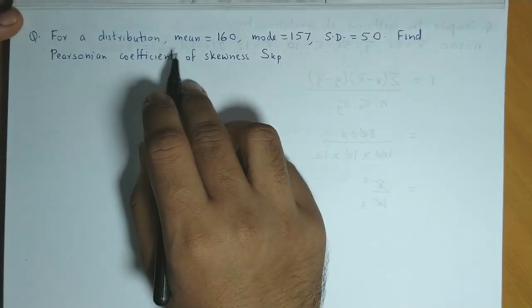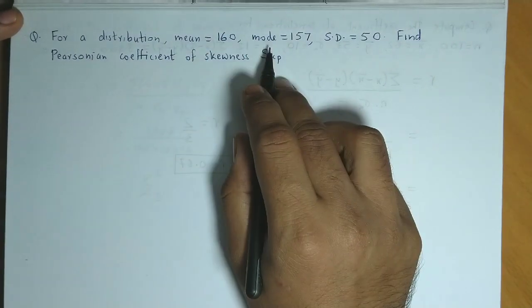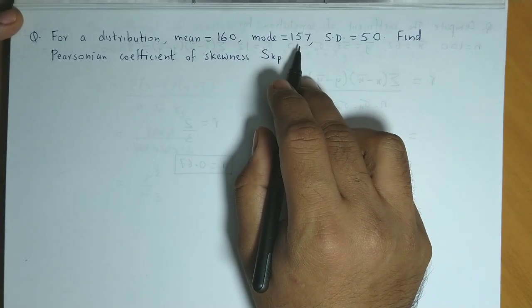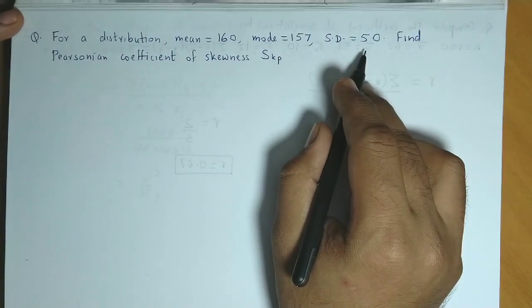Question is, for a distribution, mean value 160, mode value 157, standard deviation value 50.